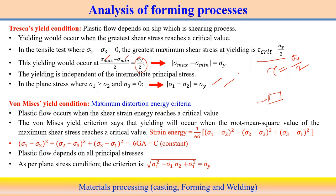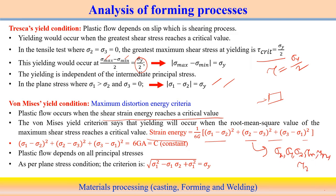The second is the Von Mises yield condition, which follows the maximum distortion energy criteria. Plastic flow will occur when the shear strain energy reaches a critical value. We calculate the total shear strain energy associated during deformation and determine when it reaches the critical value. The strain energy can be expressed in terms of principal stress components sigma_1, sigma_2, sigma_3 — which are functions of all stress components sigma_x, sigma_y, sigma_z, tau_xy, tau_yz, and tau_zx.